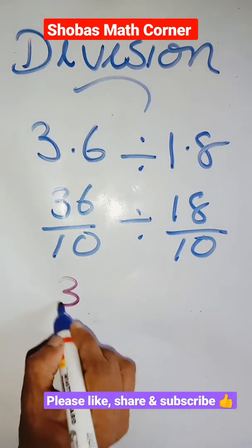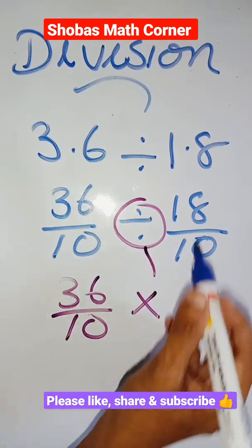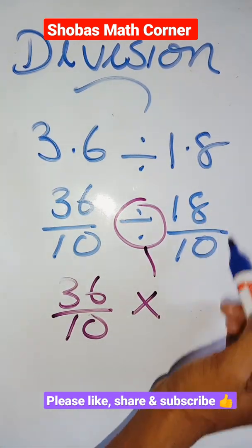Next second step is write this 36 by 10. Then division sign change into multiplication 18 by 10. Just to write reciprocal.